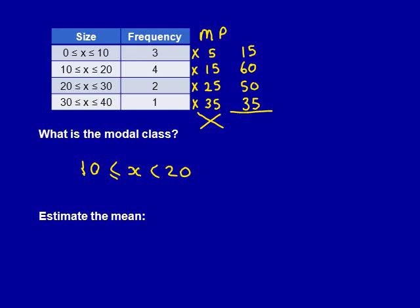The second one is 4 times 15, which is 60. The third one, 2 times 25, is 50. And the last one is 1 times 35, which is 35.